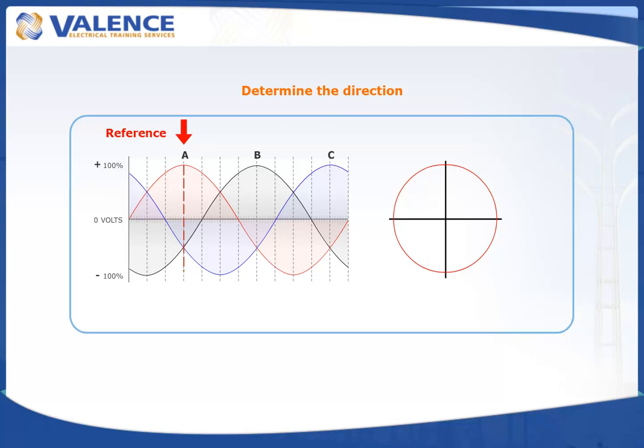We determine the direction of the phasor by drawing a line from the point where the red waveform touches the vertical reference. The phasor is drawn where our new line touches the circle, and we finish the phasor with an arrowhead to indicate its direction.